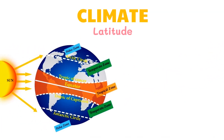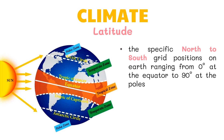Latitude is the specific north-to-south grid position on Earth, ranging from 0 degrees at the equator to 90 degrees at the poles. Lower latitudes around the equator get the most sunlight. As latitude increases, temperature decreases.